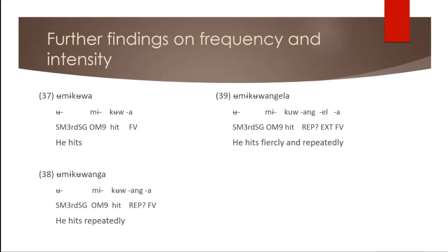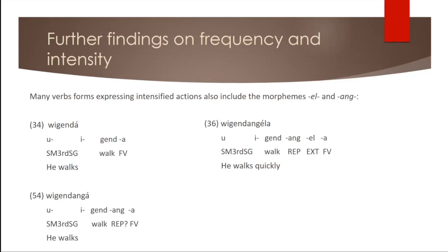So umikuwa would be just he hits, but now if we say umikuwanga, that would mean he hits repeatedly. So that's this additional element in there. And again, umikuwangela would mean he hits powerfully, fiercely, and repeatedly. So the intensity is definitely there when we have angel in these verbs.